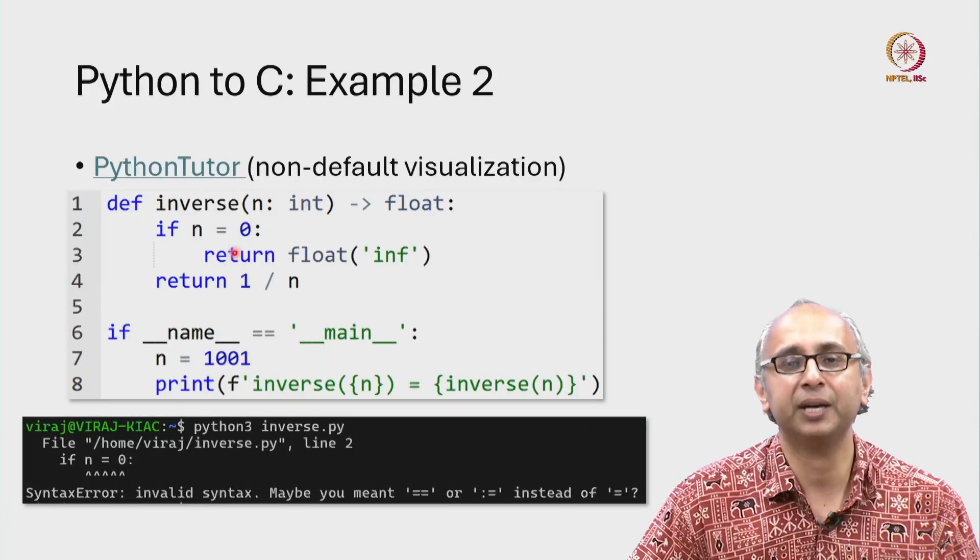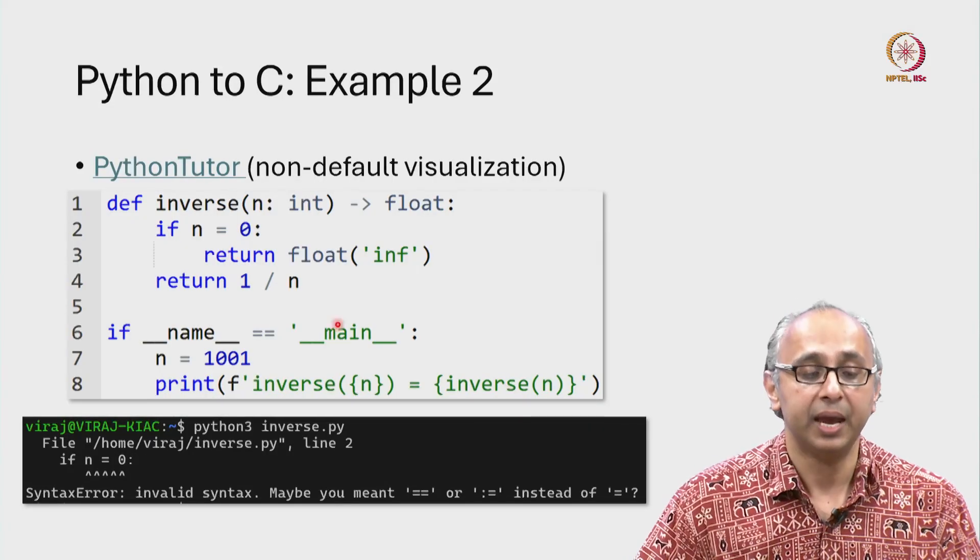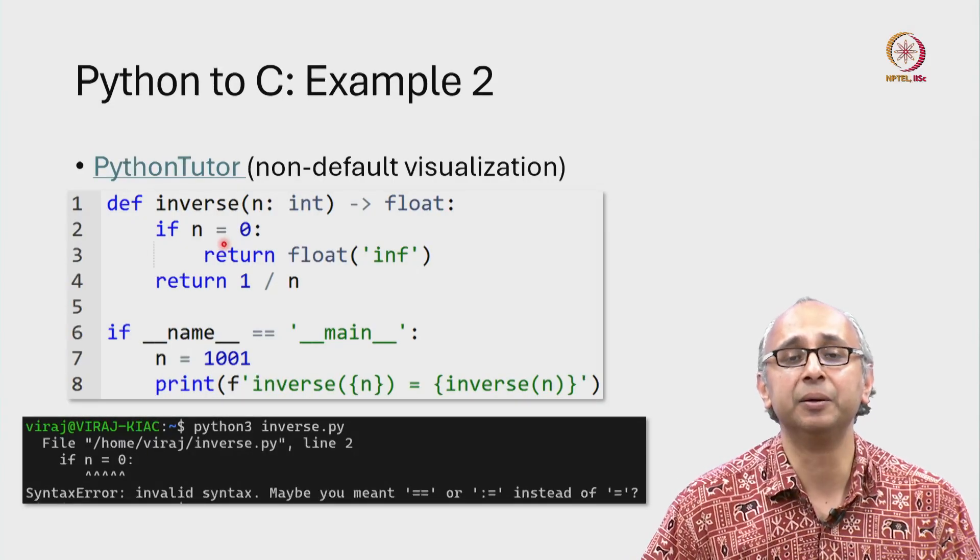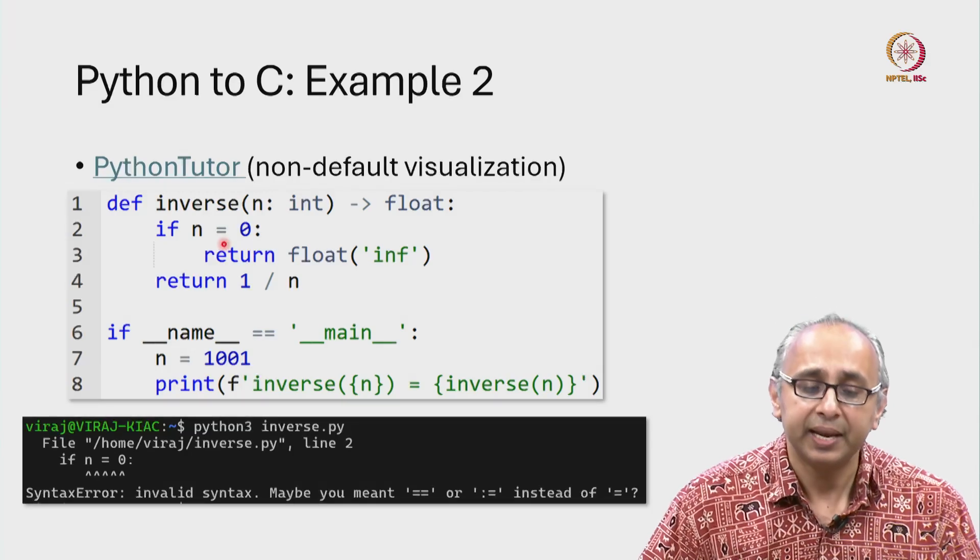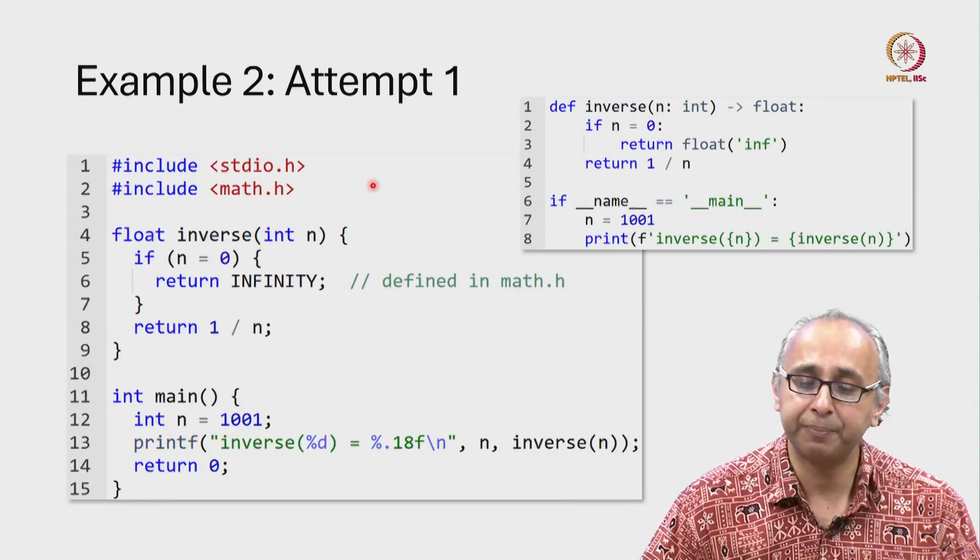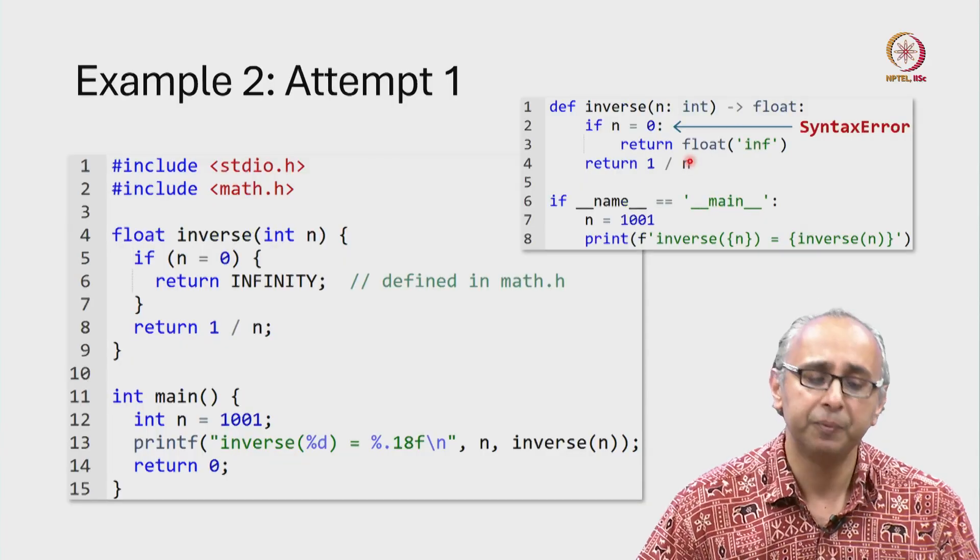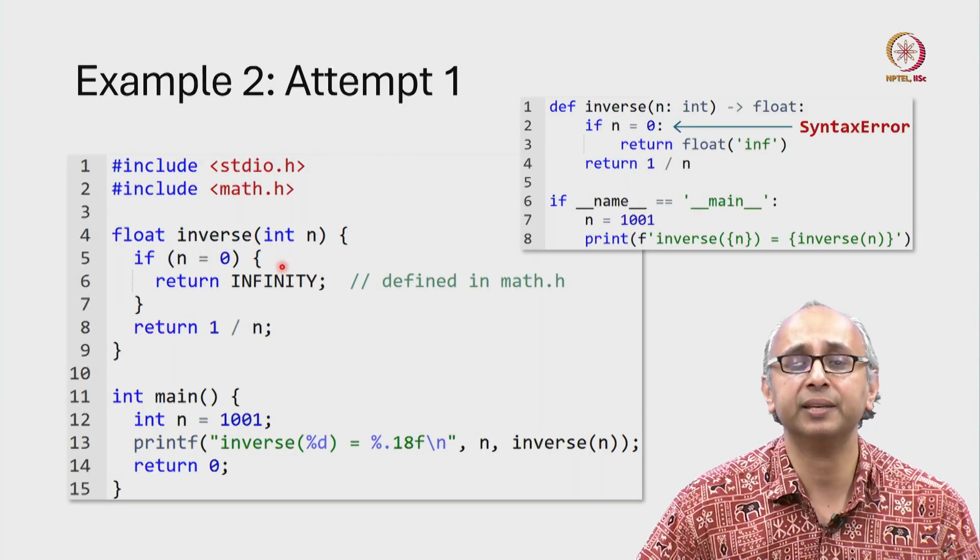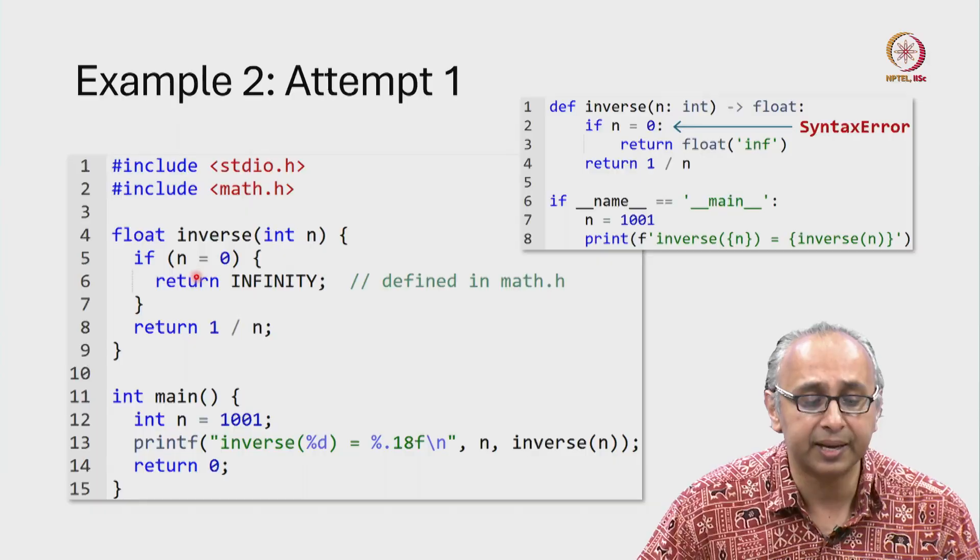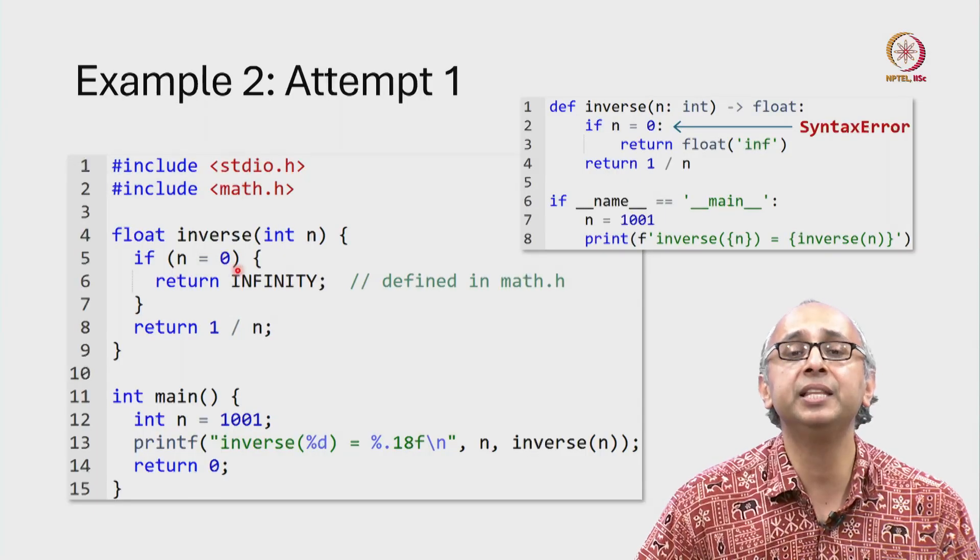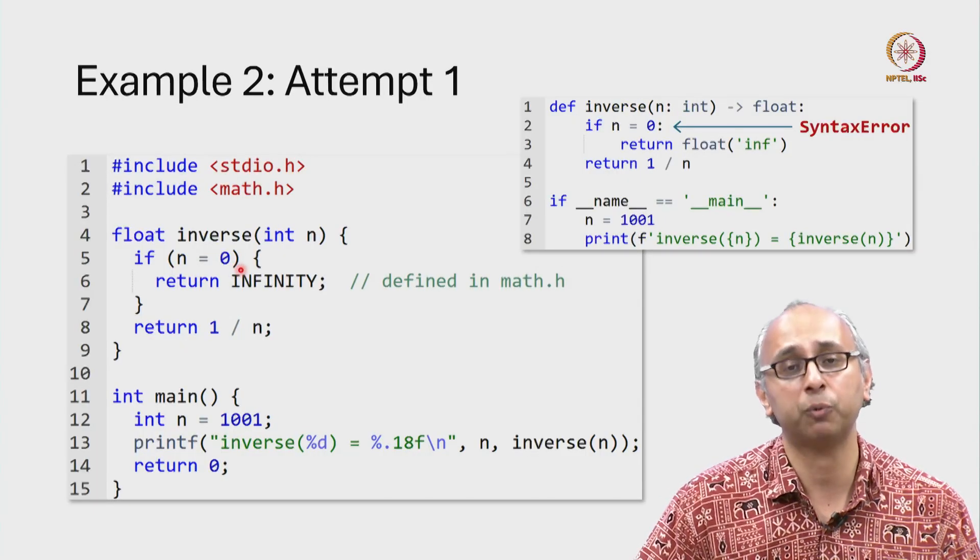This of course should have been a test for equality. Now, although this is illegal Python syntax, let us try and see what would happen if we try to convert this illegal Python code into C using a similar error, using an assignment operator instead of a test for equality.